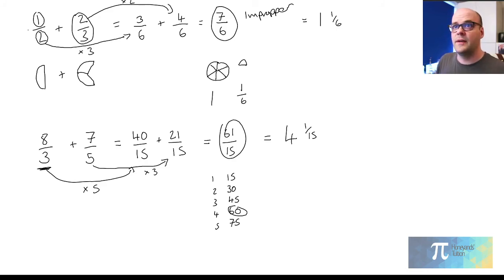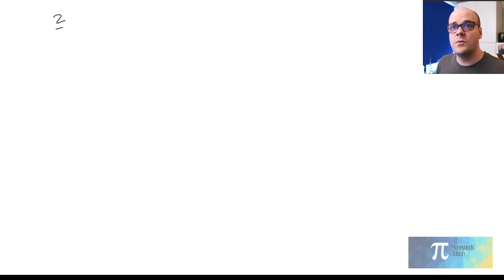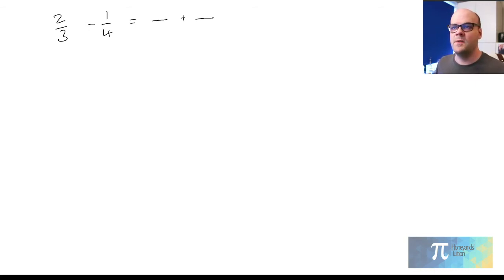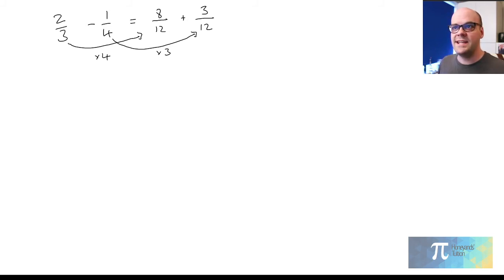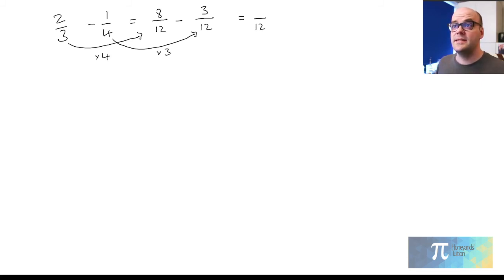The principle is exactly the same if you're subtracting fractions. Here I've got two thirds take away one quarter. I'll find the lowest common multiple, which is 12. For the first fraction, going from 3 to 12 means multiplying by 4, so two times four gives me 8 — eight twelfths. For the second, going from 4 to 12 means multiplying by 3, so one times three gives me 3 — three twelfths. Now: eight twelfths take away three twelfths. Eight minus three gives me 5, so the answer is five twelfths.